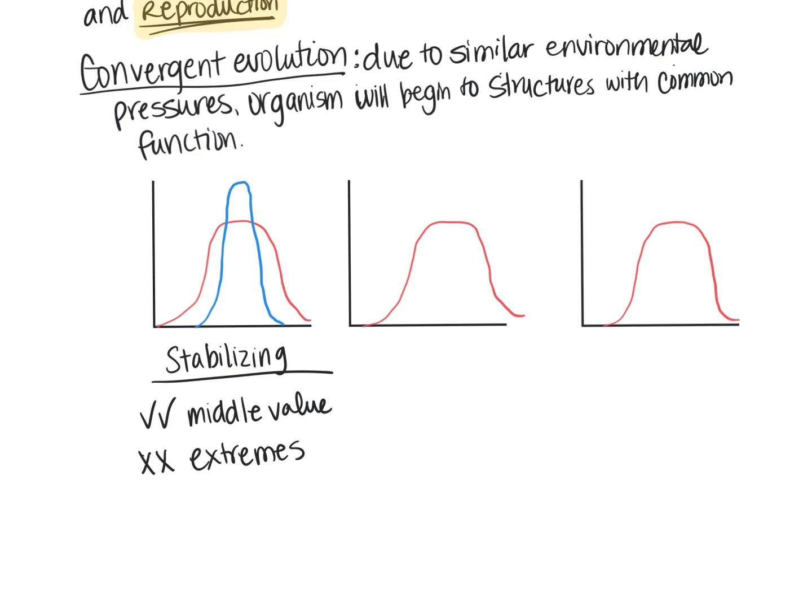Next is disruptive selection. In disruptive selection, it is the opposite of stabilizing selection. In other words, the middle value is the one that's going to be selected against, and the two upper and lower extremes are going to be favored. So when you look at the population after a disruptive selection event, it would look something like this. So notice now you have basically two sections that are the highest, and those are the extremes.